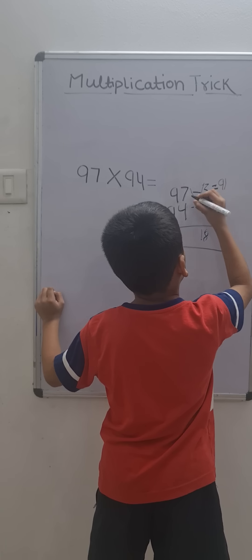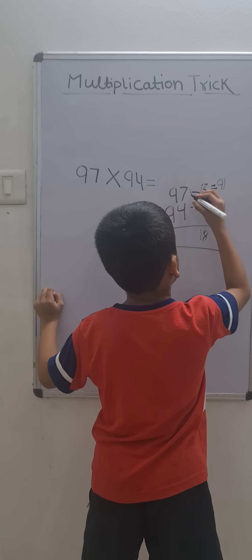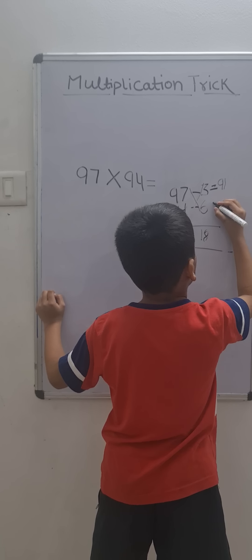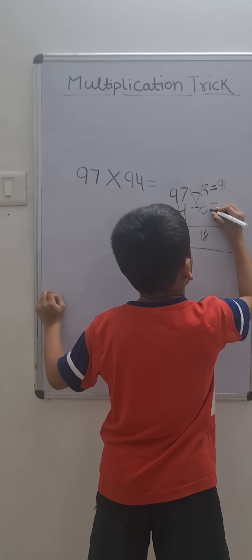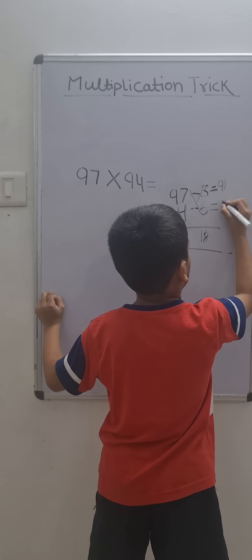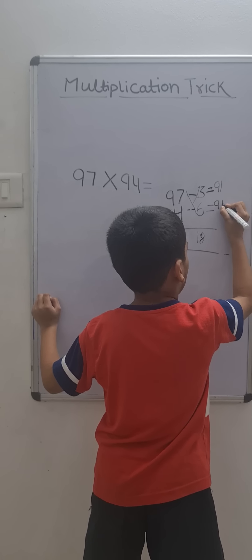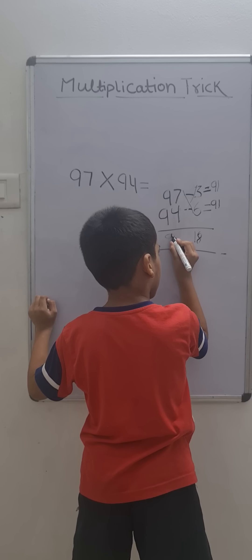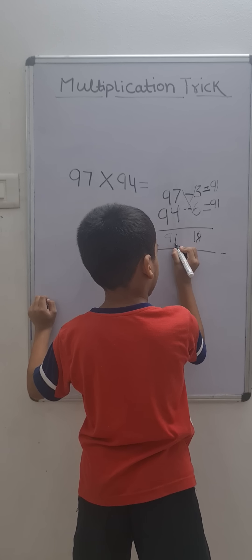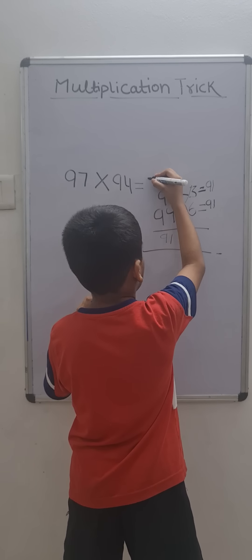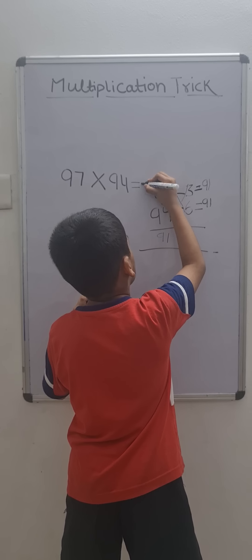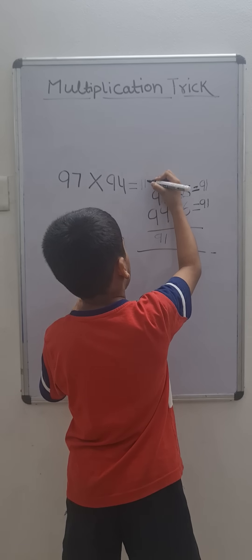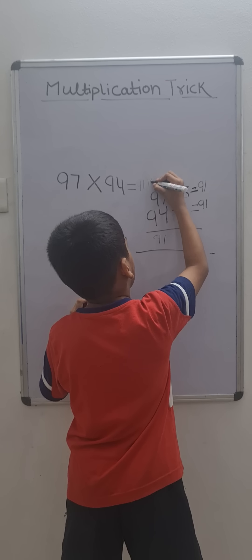Cross minus these numbers: 97 minus 6 is 91, and 94 minus 3 is also 91. So right here 91. The answer is 9,118.